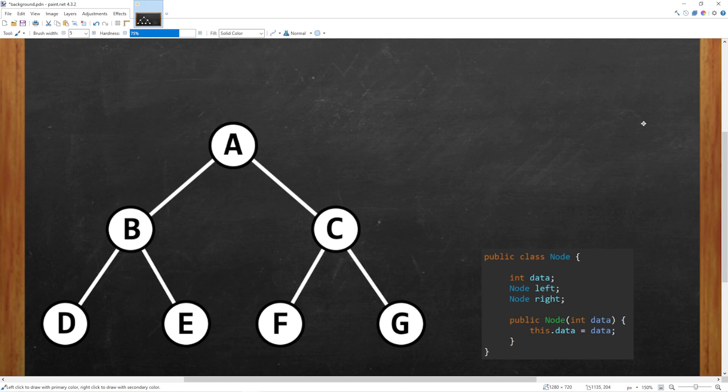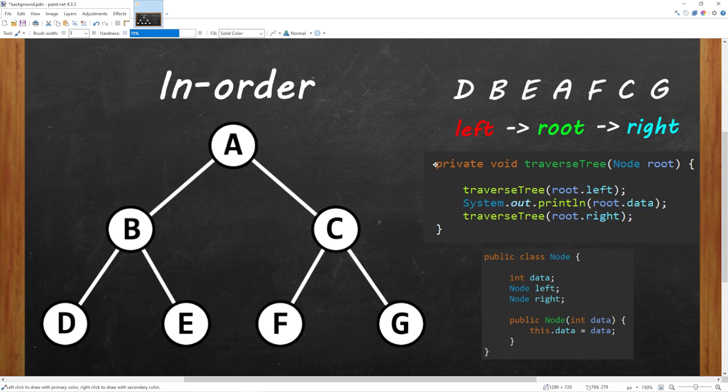Let's begin with an in-order traversal. Here's a recursive method that will navigate a tree in order. Using recursion, we visit as many left nodes as we can, followed by the root node, and then any right nodes. The entry point is always the root, and using recursion we will go as far left as we can.